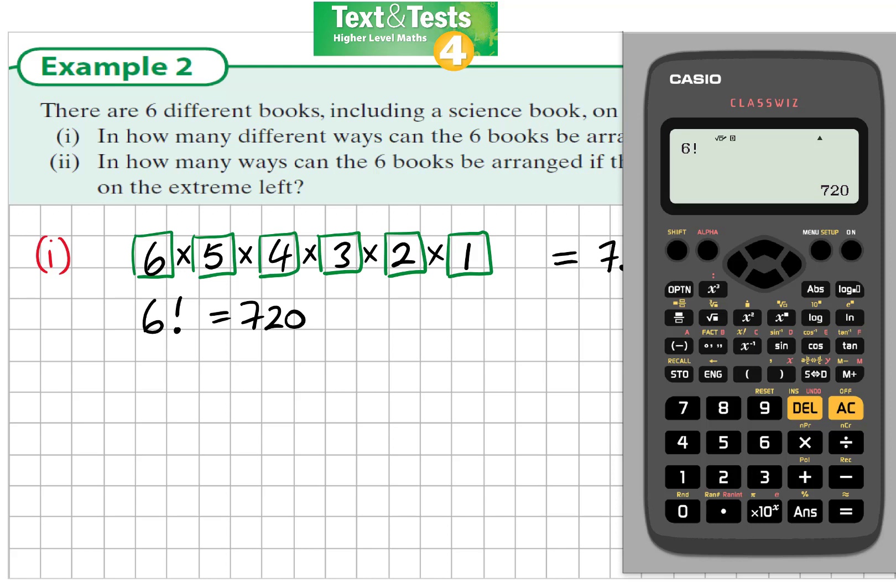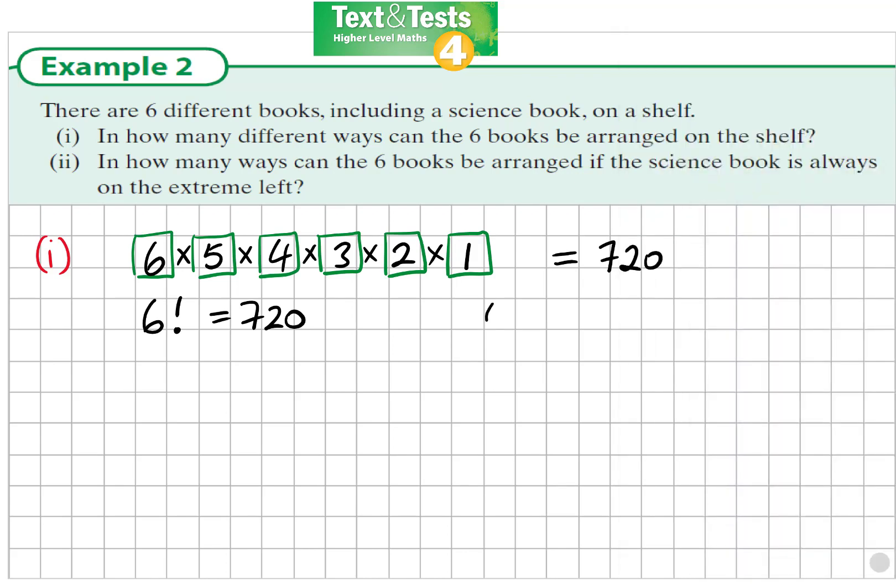And there's actually a third approach we could take as well because this is permutations. We're arranging six things out of six, so if I write in six and press shift and the multiplication button, it gives me permutations six. So six P six, the number of ways of arranging six objects when we're arranging all six of them, and we see the answer is also 720. So either of these ways of thinking about this question is fine.